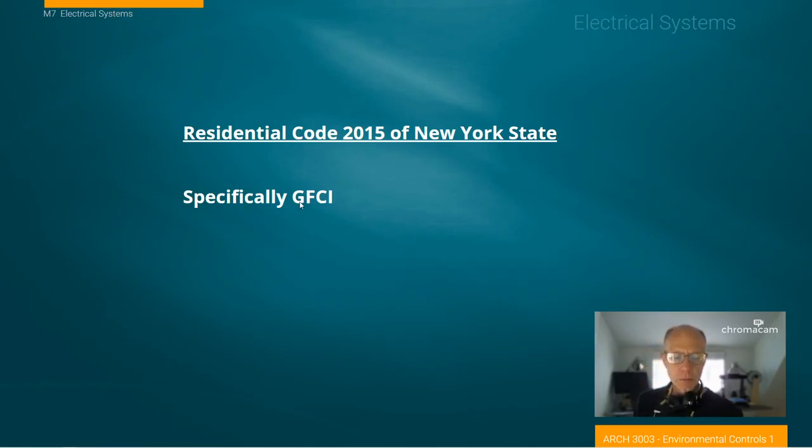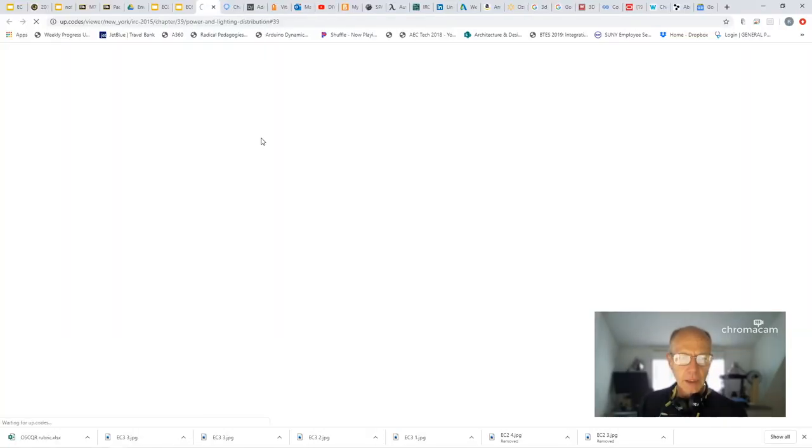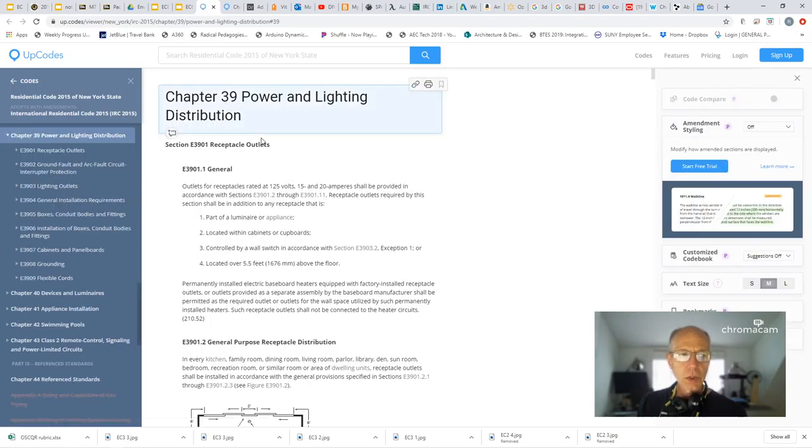So before we get into a little discussion of ground fault circuit interrupters, I really wanted to step back and click through on this residential code, because this takes us to the New York State 2015 electrical code for residential construction.